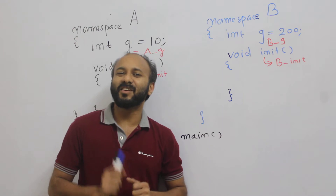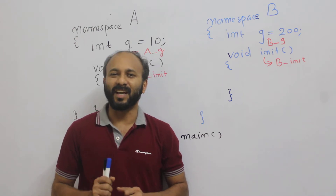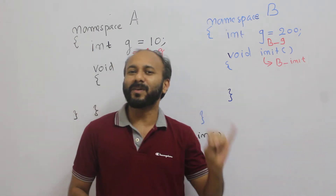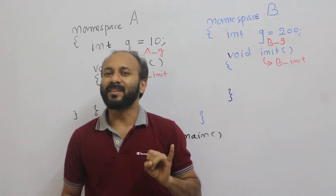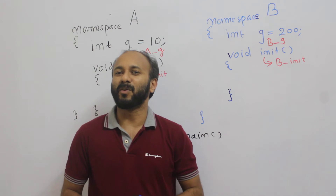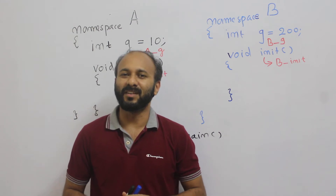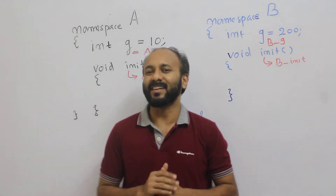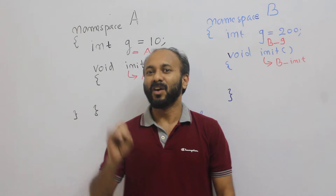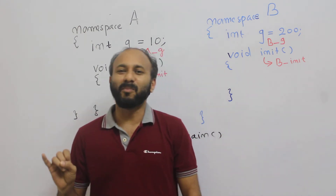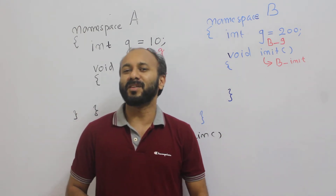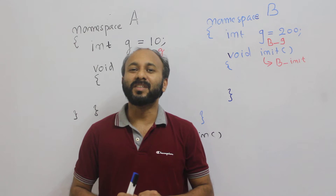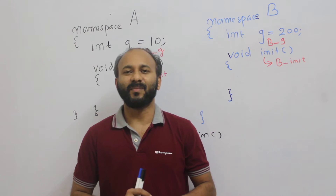We can access the content of a namespace with the help of either the scope resolution operator or with the help of the using keyword. So we have two methods for accessing the content of a namespace: one is with the scope resolution operator and the other one is with the using keyword.